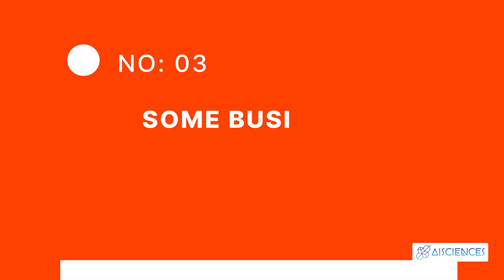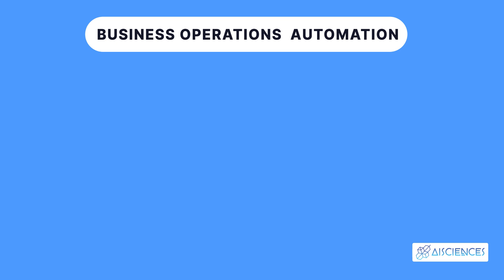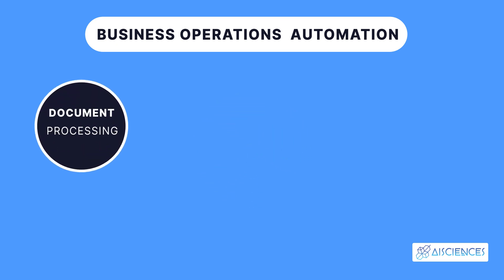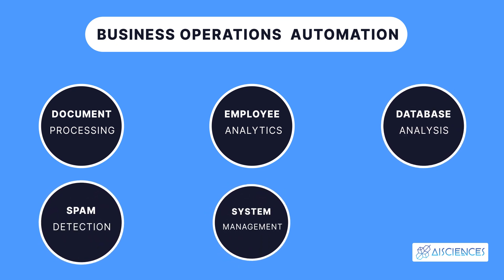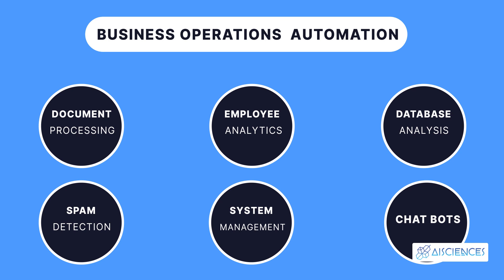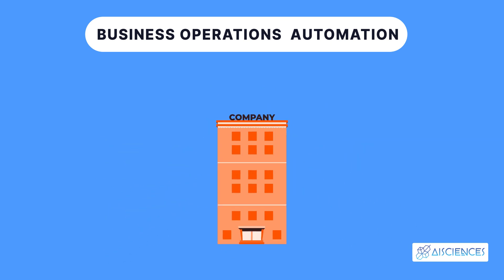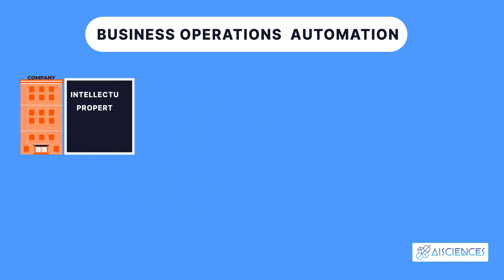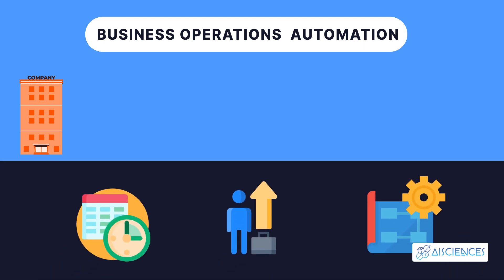Some Business Applications of Machine Learning. There are numerous business applications of machine learning. Application 1: Business Operations Automation. A host of business operations can be automated using machine learning, including document processing, employee analytics, database analysis, spam detection, systems management, and chatbots. AI and machine learning solutions can now replace, or at least support, many time-consuming manual processes. End-to-end service providers assist companies in planning, developing, and implementing customized solutions to fill their business needs.